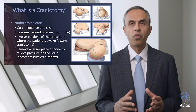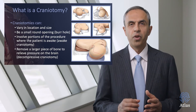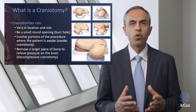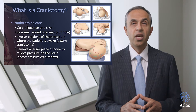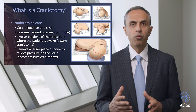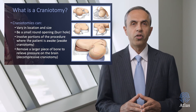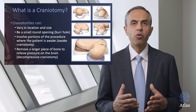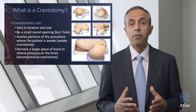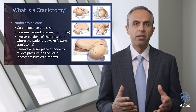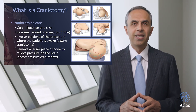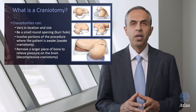It may be a small round opening, like a small burr hole, where the initial opening in the skull is performed to conduct a bigger craniotomy. It involves portions of the procedure where the patient can be awake for an awake craniotomy, where the brain is mapped so we can remove the tumor located in critical parts of the brain. We typically remove a larger piece of the bone to relieve pressure on the brain — this is called the decompressive craniotomy, which is a relatively rare procedure reserved for more critical situations.